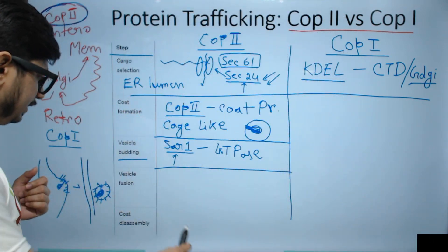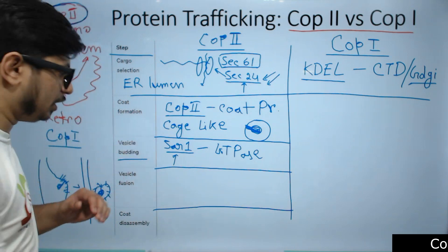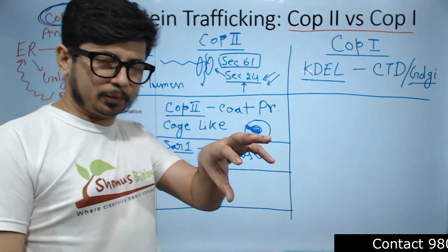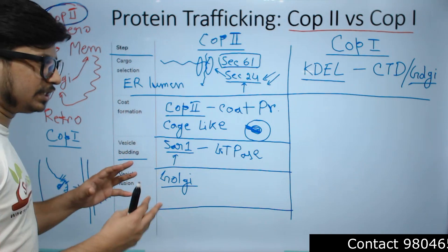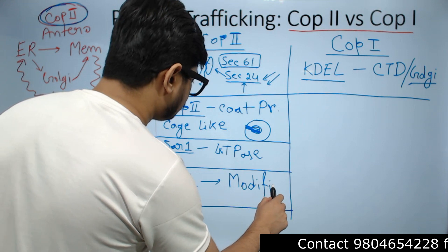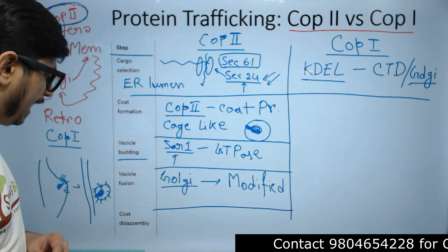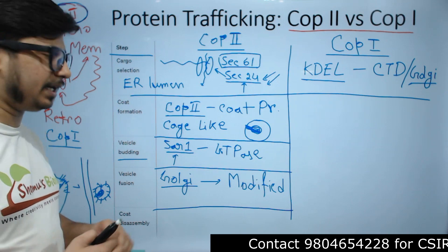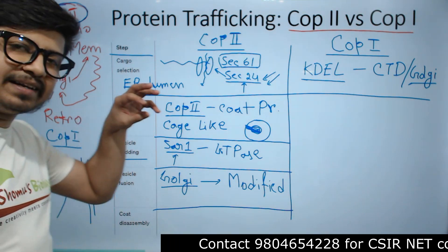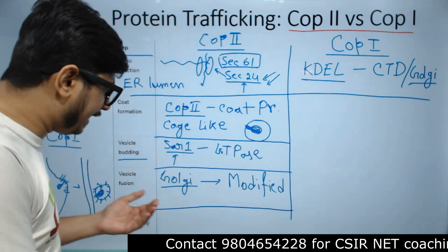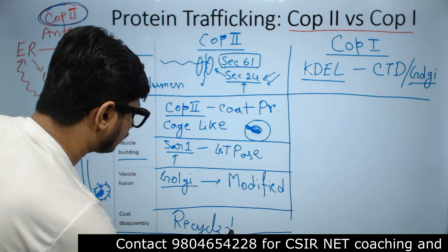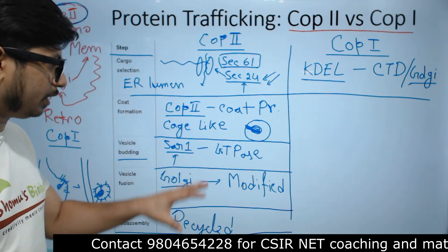Once vesicle budding is done, the vesicle moves toward the Golgi apparatus, fuses with it, and delivers the protein to the Golgi network. Inside the Golgi, the protein is further chemically modified. Once the protein is delivered to the Golgi apparatus, all the COP2 proteins are released at the Golgi membrane, reassembled, and recycled — completing the COP2-mediated protein trafficking process.